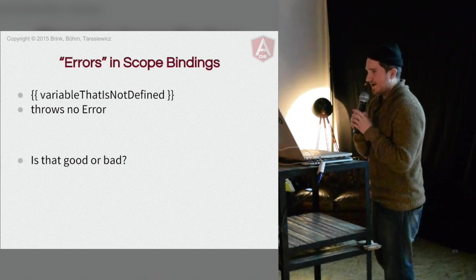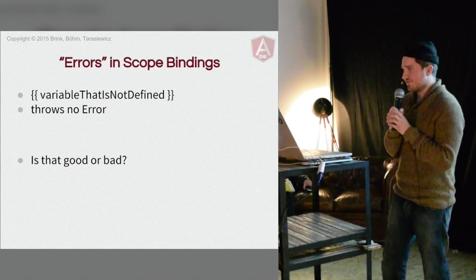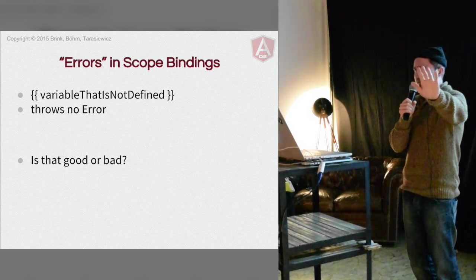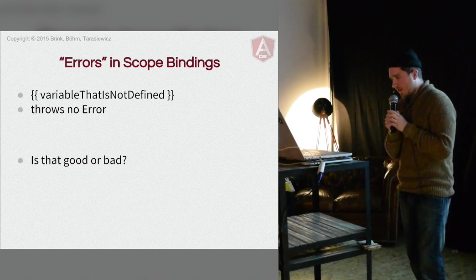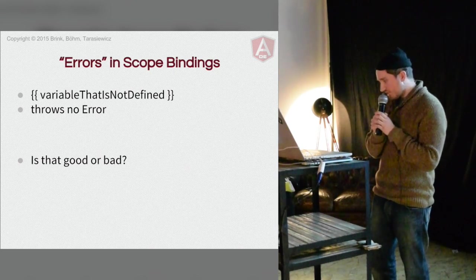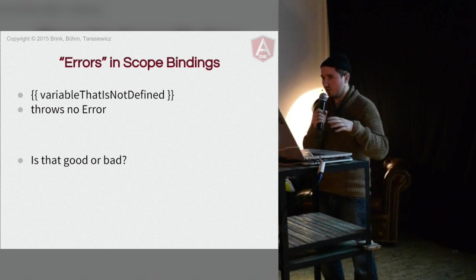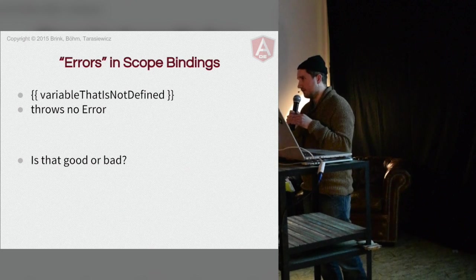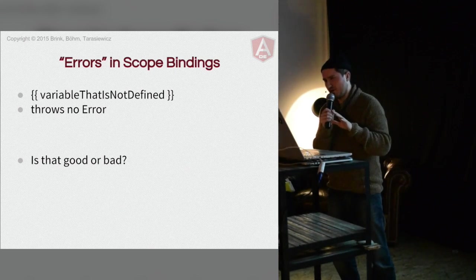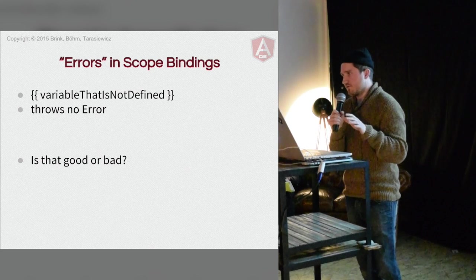Here's another issue I really like to highlight: errors in scope bindings. AngularJS is very forgiving when you have errors - you can make many mistakes and Angular just says 'everything is fine, I can work with it.' That's a really bad decision. When building real applications you want to see errors as soon as possible. Sometimes you have an error at the beginning that you just don't see, you keep building more code, you think it's ready - but there's a bug. And it's very hard to find in such a forgiving application framework.